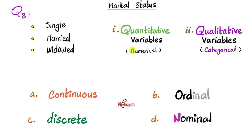Next, marital status. Single versus married versus widowed. Qualitative or quantitative? What do you think? Well, these are categories. So qualitative. Can you order them? No, I cannot. These are nominal.